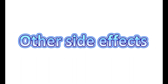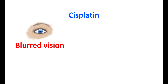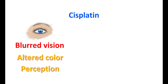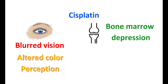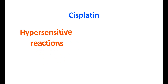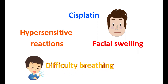Cisplatin can also affect the eyes, producing blurred vision and altered color perception, with higher doses potentially increasing the risk of blindness. As an anti-cancer agent, cisplatin can produce bone marrow depression, resulting in decreased neutrophil count and increased risk of infections; fever and inflammation may indicate infection due to this effect. Additionally, cisplatin can produce hypersensitive reactions in some people, including facial swelling, difficulty breathing, and skin redness and rashes. If any hypersensitive reaction develops, cisplatin should not be re-administered to avoid fatal allergic reactions.